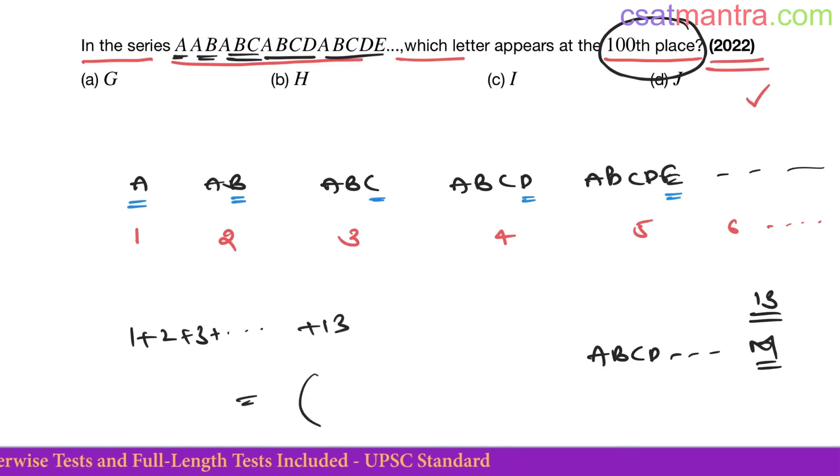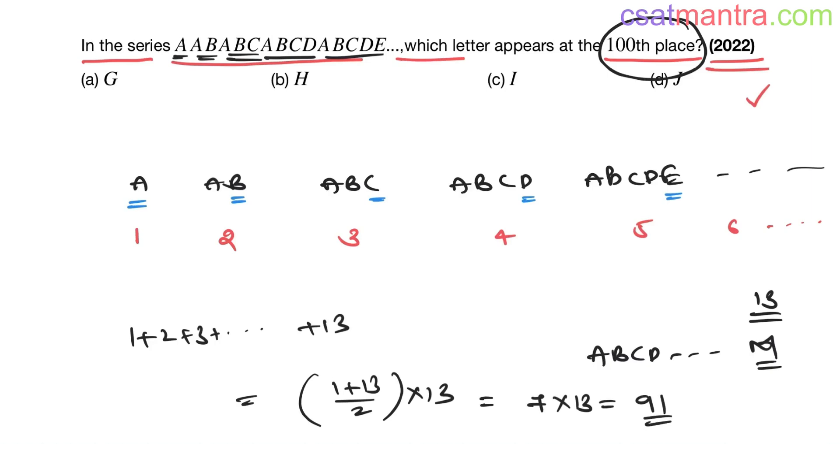What is the sum? Average of first and last: one plus thirteen by two. Number of groups thirteen. So this is fourteen by two. Fourteen by two means seven. Seven thirteens are ninety-one.